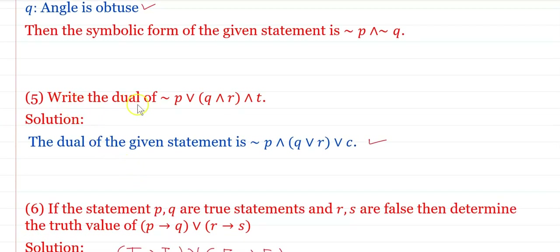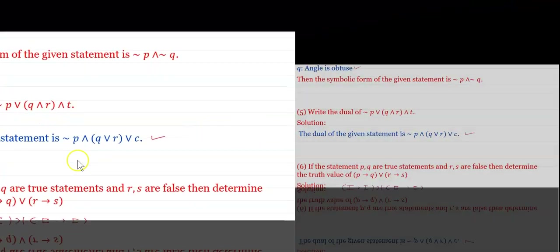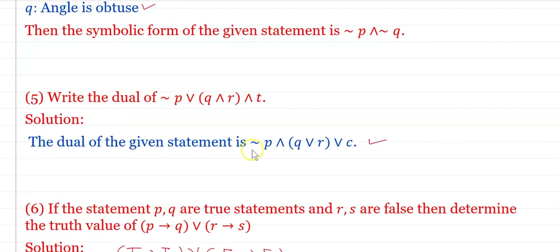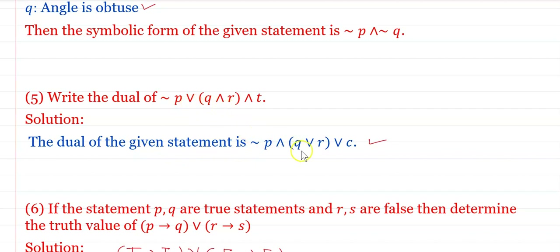Write the dual of: ¬p ∨ (q ∧ r) ∧ T. The dual is obtained by replacing OR by AND, AND by OR, and T by C (contradiction). Therefore the dual of the given statement is: ¬p ∧ (q ∨ r) ∨ C. This is the dual of the given statement.